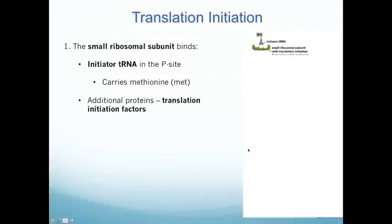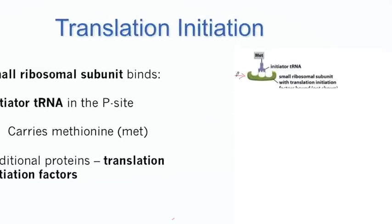Let's talk about how translation is initiated. There are two phases: the start of translation and then continuation. To start translation, the ribosome isn't assembled yet — all we have is the small ribosomal subunit, which binds the mRNA, and a special tRNA molecule called initiator tRNA. This initiator tRNA carries methionine, because the codon for methionine is AUG, which is the start codon.